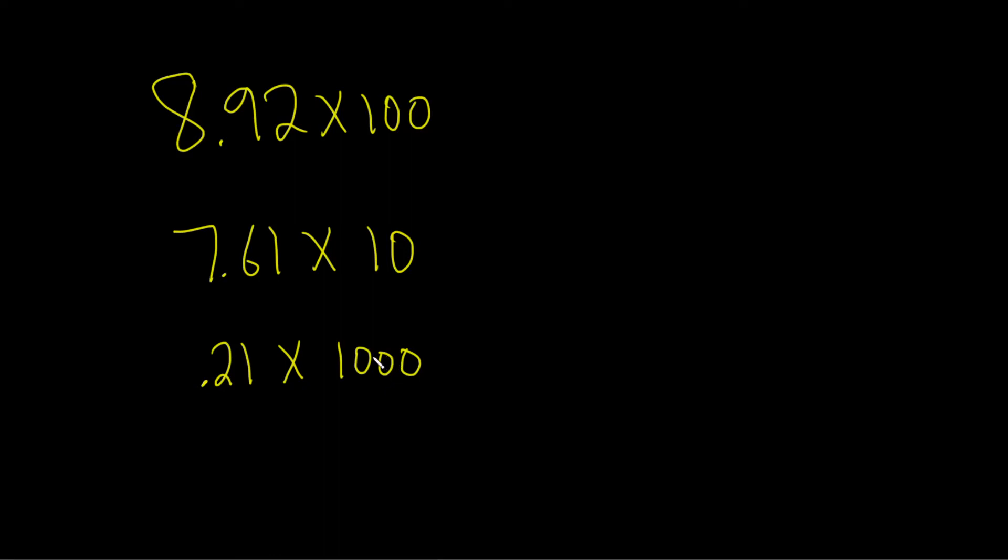Hi everyone. In this video, we're going to do some examples of multiplying by moving the decimal point. Basically, when you multiply by 10, 100, or 1000, you move the decimal point to the right by however many zeros you have.